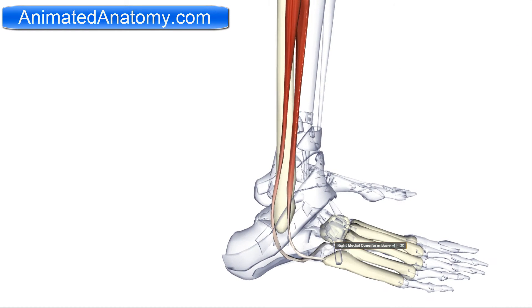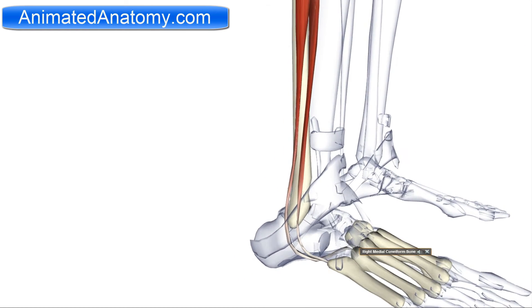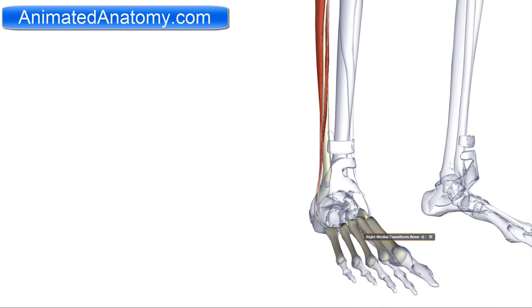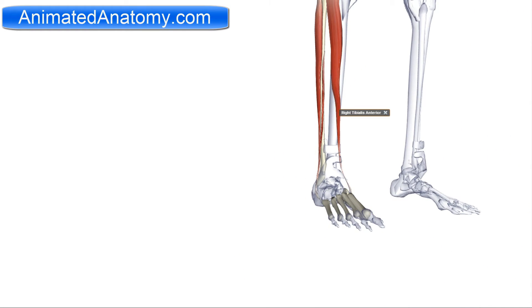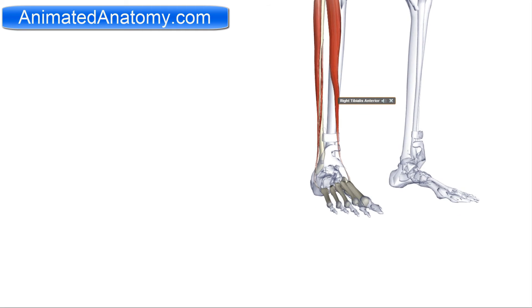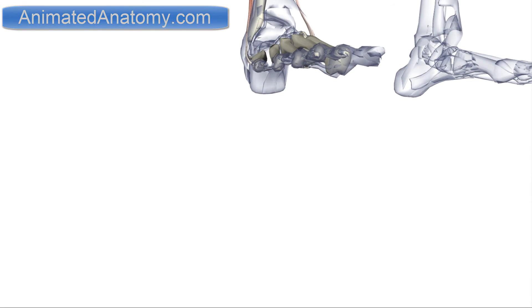The antagonist of the fibularis longus is the tibialis anterior, because the tibialis anterior serves for the inversion of the foot. Now I will talk about the muscles of the foot.